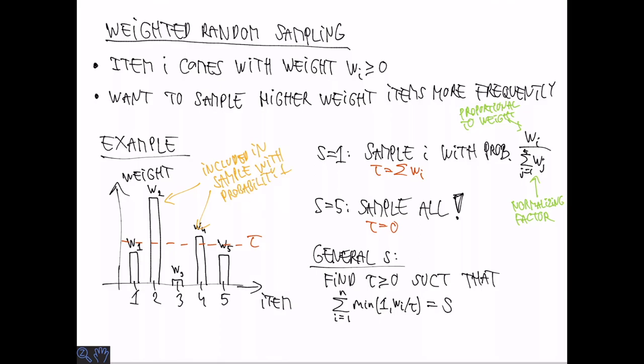But in general, tau will be somewhere in the middle, where there are some weights that are above tau, and they will be included in the sample with probability one. And there are some elements that are below tau, and they will be included in the sample with probability, which is the weight divided by tau. And it's easy to see that if we do it like this, the expected sample size is exactly s. So let's call this sampling probability pi, minimum of one and wi over tau.